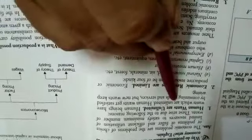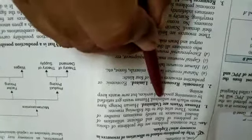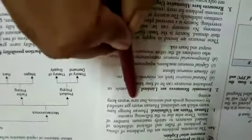Human wants are unlimited. Human beings have wants which are unlimited. Human wants get satisfied by consuming goods and services, but new wants crop up or arise.